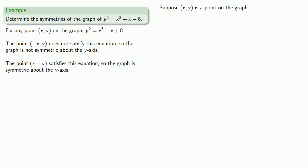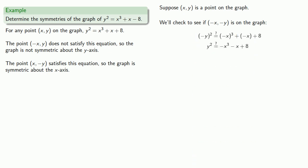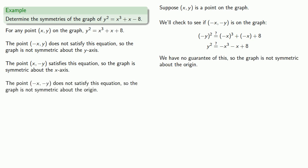Finally, we'll check for symmetry about the origin. Suppose (x, y) is a point on the graph; we'll check to see if (-x, -y) is on the graph by substituting and simplifying. We are guaranteed the original equation is true, but the substituted equation is nothing like that, so we don't have a guarantee. Therefore the graph is not symmetric about the origin.